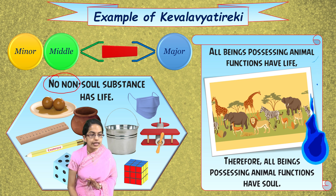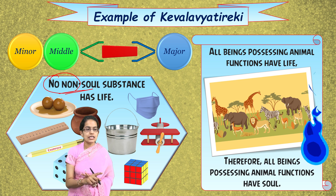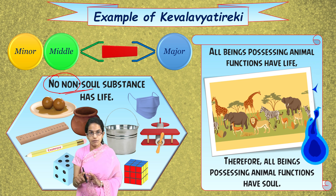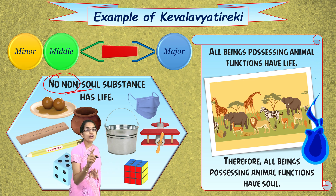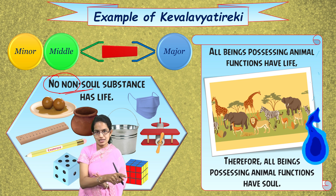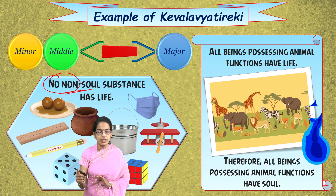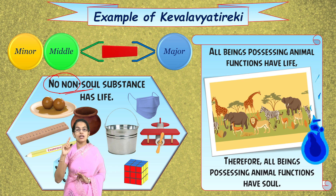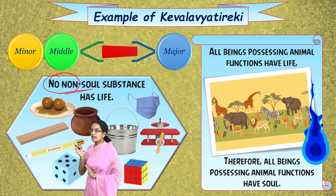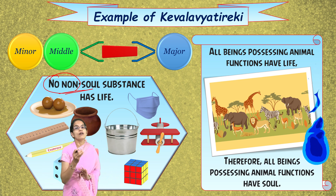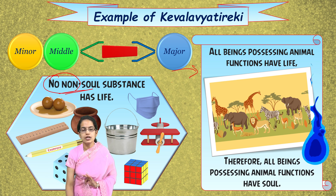If I try to make this a positive sentence — 'substances which have soul have no life' — that is an incorrect statement. Therefore I cannot give a positive example of the same, and hence Kevalya Vyatireki always establishes a complete negative relation between the middle term and the major term. To restate: 'no non-soul substance has life' means whatever substance has soul has life — animals have soul, animals have life — inferred from the negative instance.